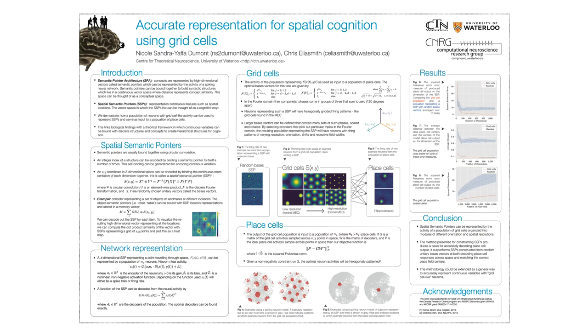My name is Nicole Dumont, and I'm a PhD student in the Computational Neuroscience Research Group at the University of Waterloo. The paper I'm presenting is called Accurate Representation for Spatial Cognition Using Grid Cells.